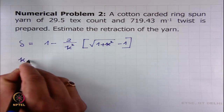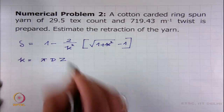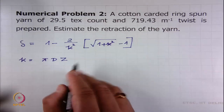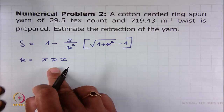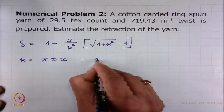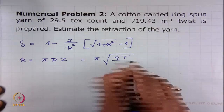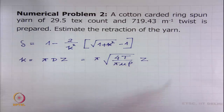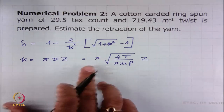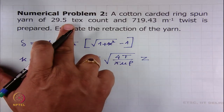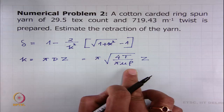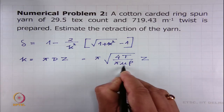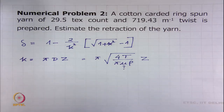The twist z is given as 719.43, but d is not given directly. To calculate d, we use the formula involving π, capital T (29.5 tex), the fiber density ρ for cotton (1520 kg/m³), and the packing fraction μ. However, μ is not given, so we need to find it separately.